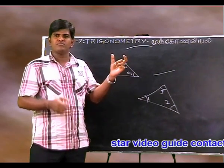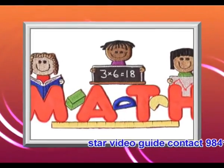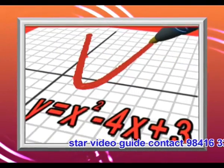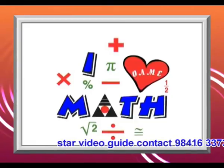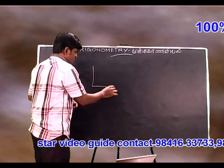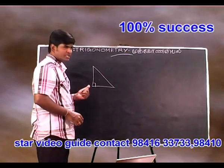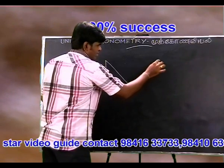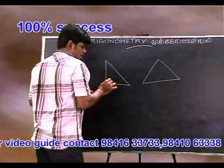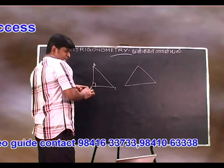A right angle triangle — in Tamil, 'right angle triangle' means the triangle with a right angle. For example, this is the right angle triangle. Whatever one corner is 90 degrees, this is the top corner, with corners named A, B, C.